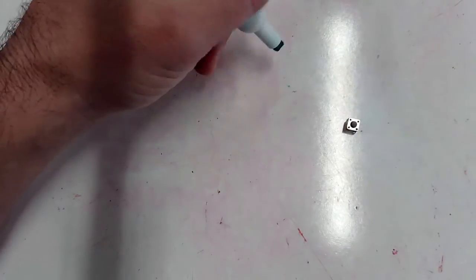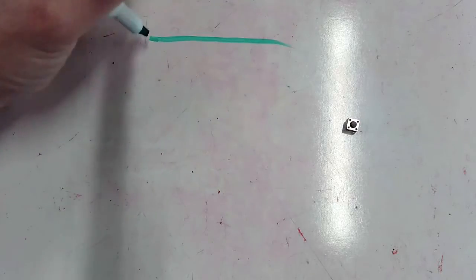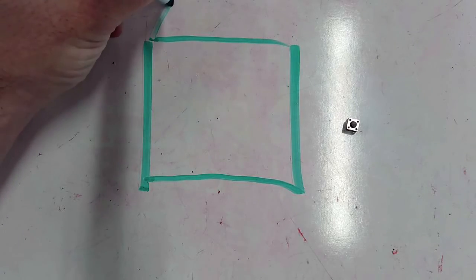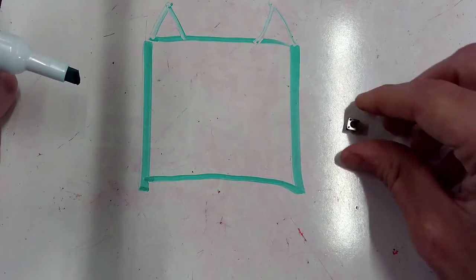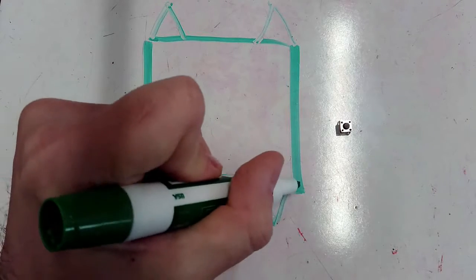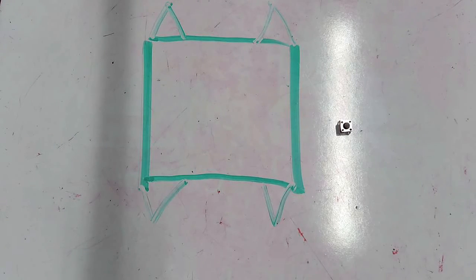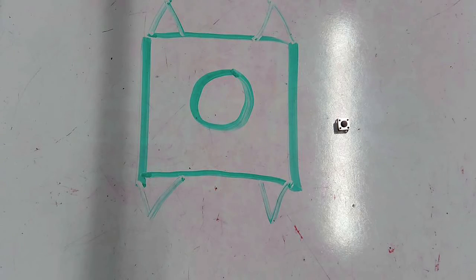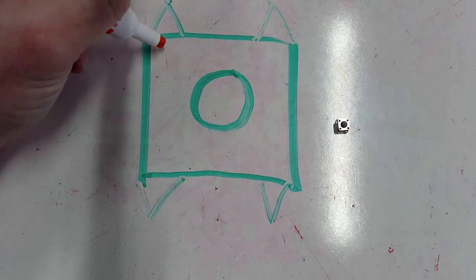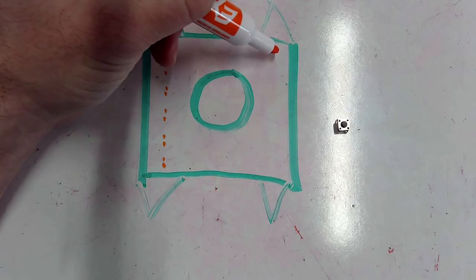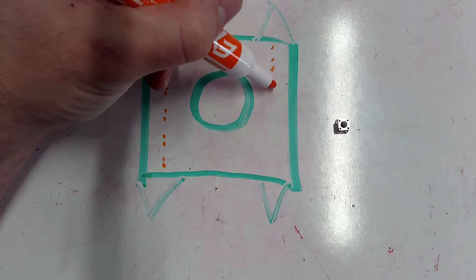If I were to open up this button, you'd see it's basically a square. From the top side it has two legs sticking out, and from the bottom side it has two legs sticking out. There's the button itself in the middle that we push with our finger. On the inside, the two legs on the left are connected with a wire, and the two legs on the right are connected with a wire.